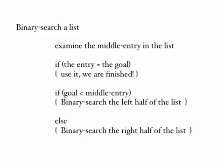Here's the algorithm for a binary search, called binary search a list. In a nutshell, we examine the middle entry in the list. If the entry is the one we're looking for — it's the goal — then use it; we've finished the algorithm. If the goal is less than the middle entry we've just discovered, then we need to search the left-hand side of the list, because the goal will appear to the left in a sorted list of the entry we've just examined. Otherwise, we search the right-hand side. That's the whole algorithm for binary search.